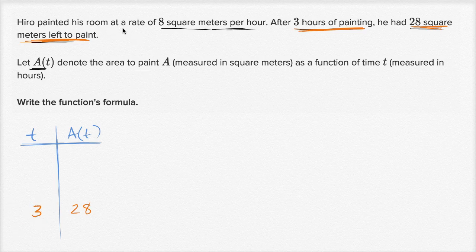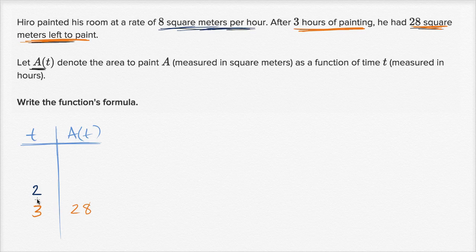He painted his room at a rate of eight square meters per hour. So let's back up a little bit. After two hours, how much would he have had left to paint? He's painting eight square meters per hour, so every hour that goes by he's painting more. But a of t isn't how much he has painted — it's how much he has left to paint. So he should have less to paint as time goes up. As time increases, a of t should go down.